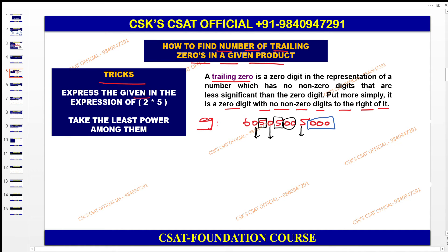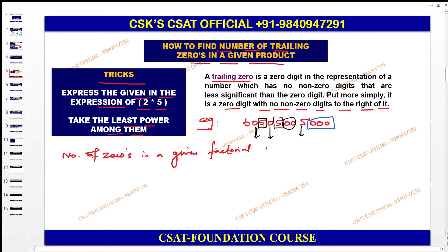In our class we have done a simple trick: express the given expression as a product of 2 and 5, then count their powers. We need to take the least power among them. That is the procedure you need to follow. One more procedure is to find the number of zeros in a given factorial — this model is also very important and we covered it during the foundation class.